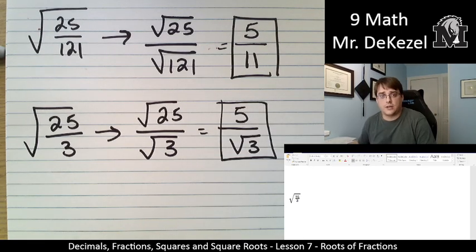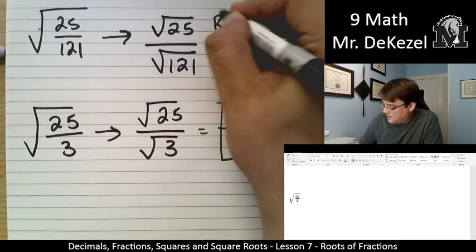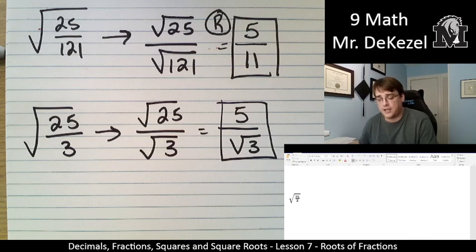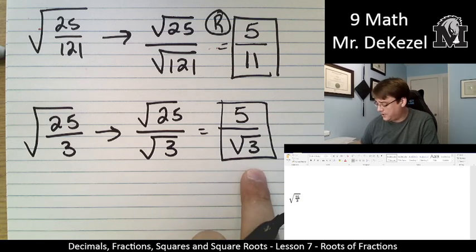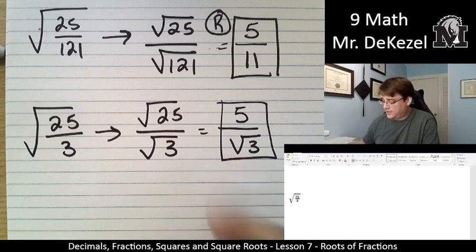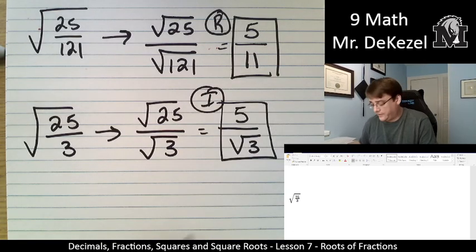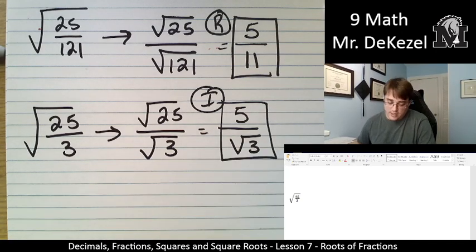A couple of things I want to point out. This up here, written as a fraction, this is a rational number. Any fraction is a rational number. If we have this one down here, it's a fraction, but it's got a square root sign in it. So, this one is irrational. If it ever got a square root sign, it makes it irrational immediately. So, that's a rational number. That is an irrational number.